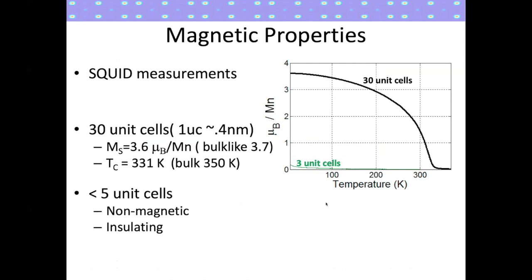This is a plot of the magnetization as a function of temperature. For a 30-unit-cell film, it's very clear the material transitions from ferromagnetic to paramagnetic at about 330 Kelvin, with saturation magnetization very close to what you expect for bulk-like LSMO. But if we reduce the film thickness to three unit cells, the magnetization goes down by a very large amount — even at very low temperatures — indicating these very thin films have undergone a thickness-dependent transition away from ferromagnetism.